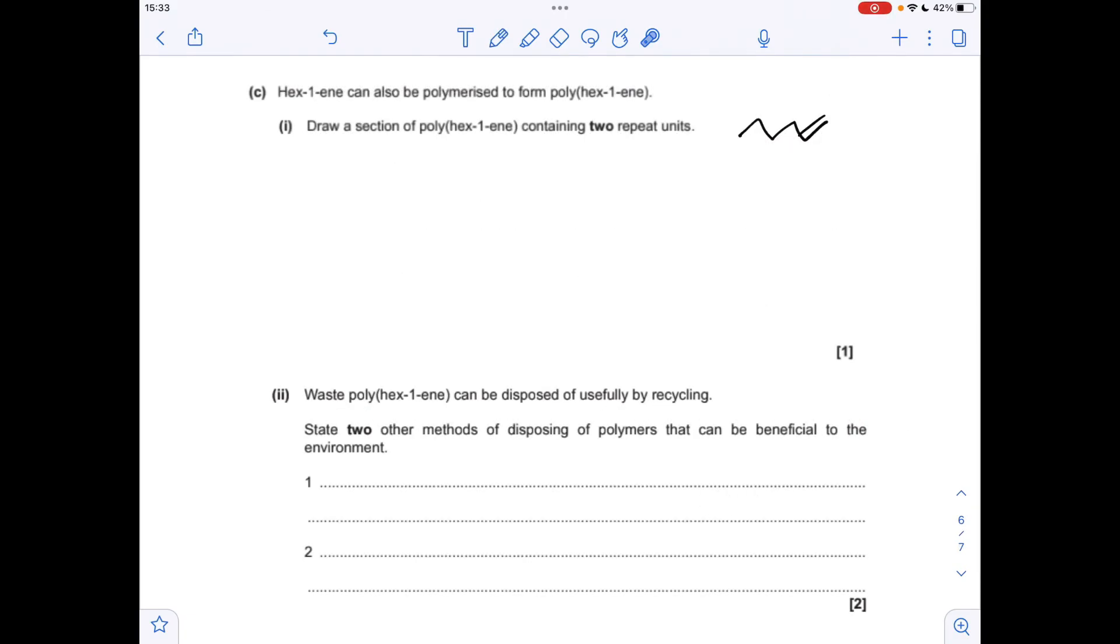Moving on to the final part about addition polymers. We've got to draw a section of polyhex-1-ene containing two repeat units. My top tip for any addition polymer is to make your monomer look like an ethene molecule. So the monomer's going to look like this. Now it's really easy to turn this into the polymer.